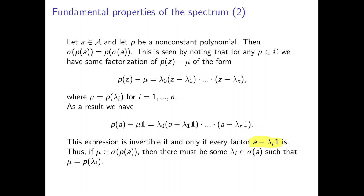Then we use this factorization to argue that P(A) minus mu times the unit equals this factored expression. This factored expression is going to be invertible if and only if every factor is invertible itself. Therefore, if mu is in the spectrum of P(A), then there must be some lambda_i in the spectrum of A such that mu equals P(lambda_i). So this is the way you prove that the spectrum of P evaluated at A is equal to P of the spectrum of A — or the image of the spectrum of A under P.